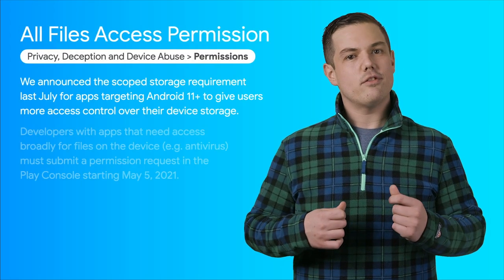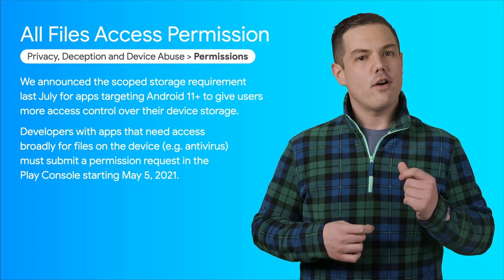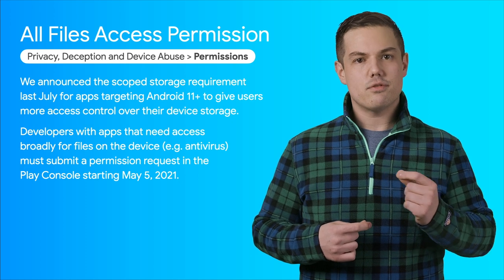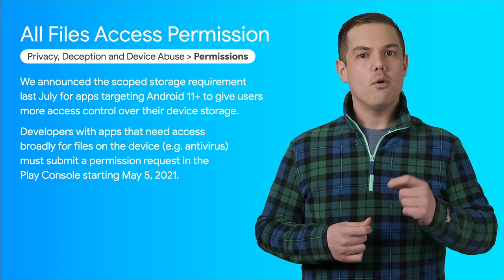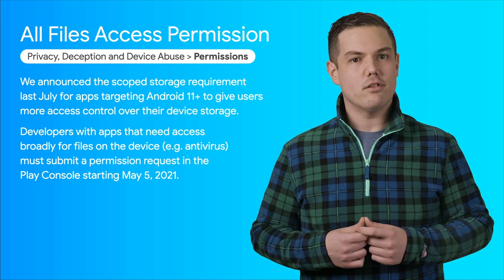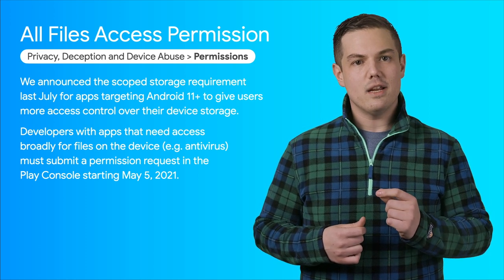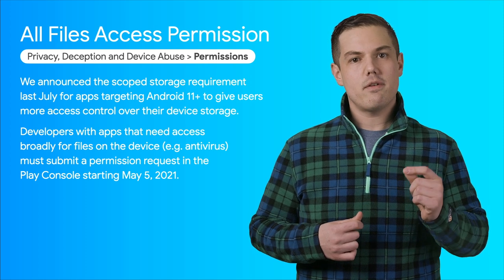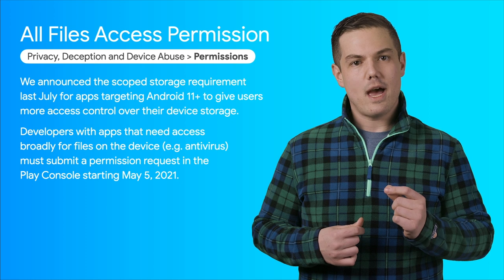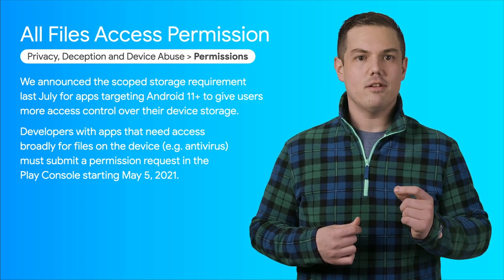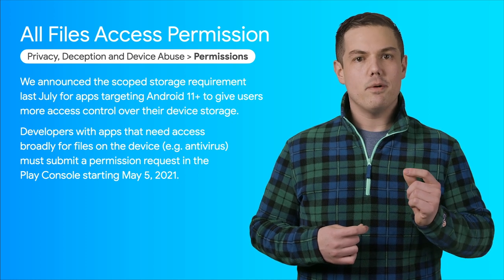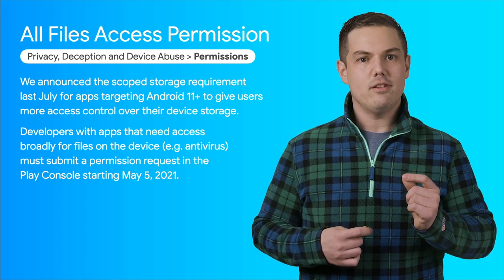Last July, we announced the scoped storage requirement for apps targeting Android 11 or above to give users more access control over their device storage. We've clarified that files and directory attributes on a user's devices are regarded as personal and sensitive data, and apps should only request access to device storage which is critical for the app to function and may not request access to device storage on behalf of any third party for any purpose unrelated to the user-facing app functionality.